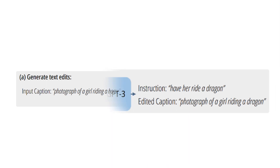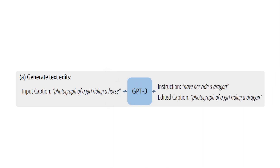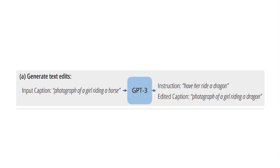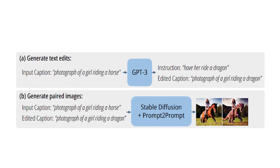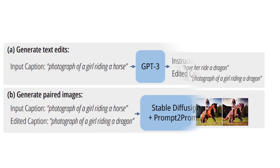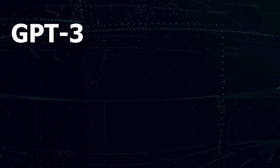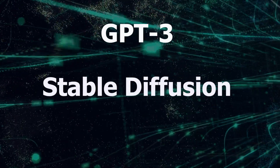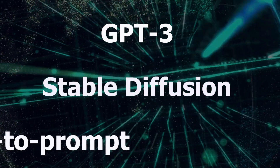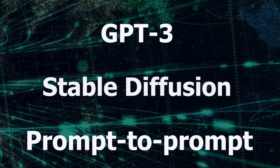They use a version of the GPT-3 model to generate instructions and edit image captions with them. These generated new captions are then sent to generate the image along with an edited version of it, thanks to a third model called prompt-to-prompt, which can edit an image based on modifications of the text that was used to generate it. So at this point, we are using three powerful pre-trained models to artificially create data for our new editing task: GPT-3 for generating text, Stable Diffusion for generating images, and finally prompt-to-prompt for editing them based on the edited caption.